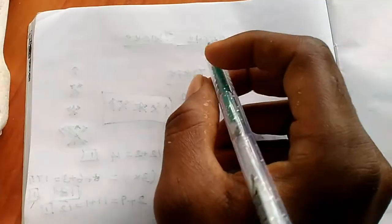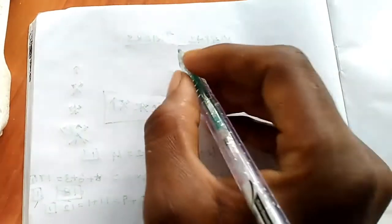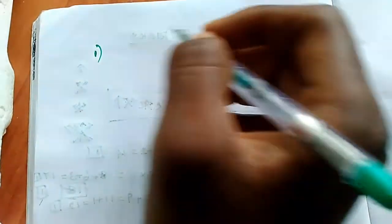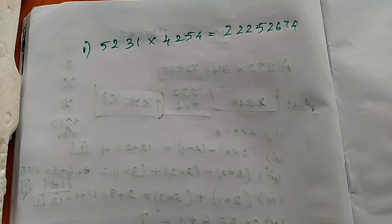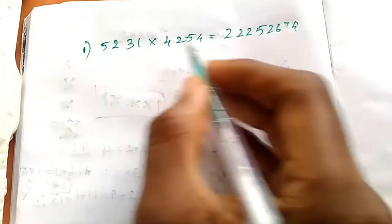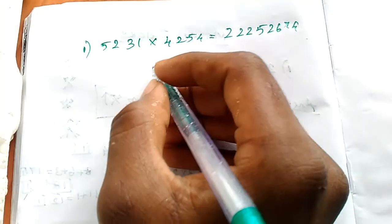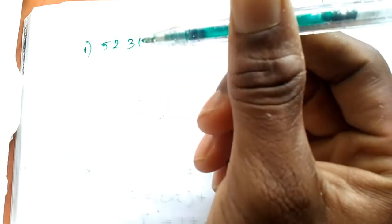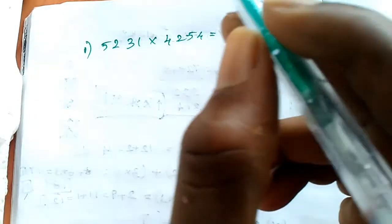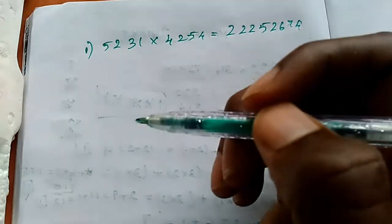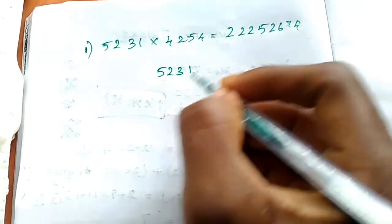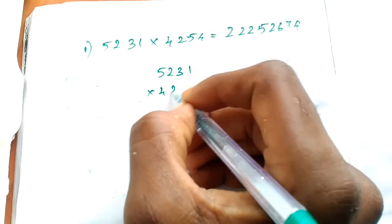Okay friends, now we are going to see one four-digit number multiplied by another four-digit number. If you have a comment, please give me a comment and I will explain it — that is why I made this video. Let's continue: 5231 × 4254. Let's see how this is applied.